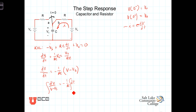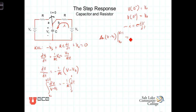Now let's go ahead and integrate from zero to T on the right-hand side. On the left-hand side, the corresponding limits of integration will be from V naught to V of T, the voltage across the capacitor at that value of T. Performing the integration on the left-hand side, we have the natural log of V minus V sub S, evaluated from V naught to V of T.